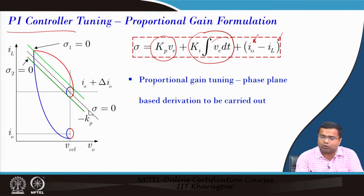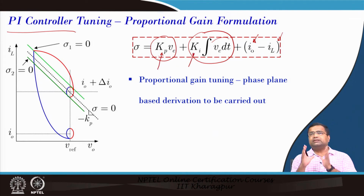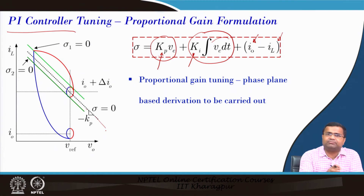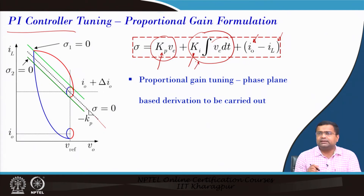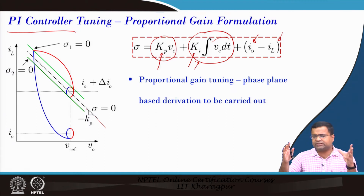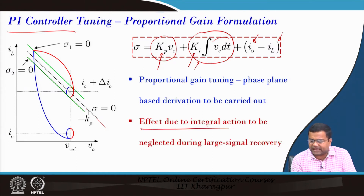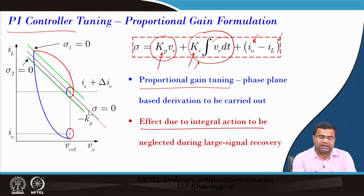We need to obtain the proportional gain and the integral gain — that is the tuning objective. The proportional controller decides the slope of the surface and provides the first action that drives the trajectory to recover in approximately one switching cycle. The integral action is designed to achieve zero steady-state error; it is a very slow process aimed at eliminating any offset.